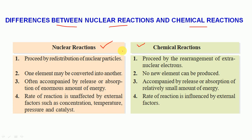The first point: in nuclear reactions, the process is preceded by redistribution of nuclear particles. In chemical reactions, the process is preceded by rearrangement of extra-nuclear electrons.